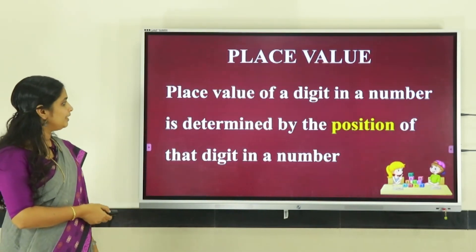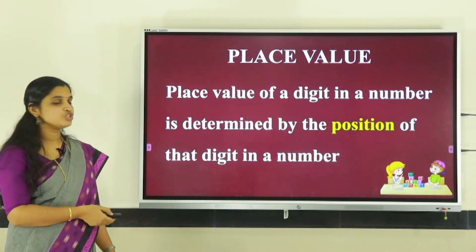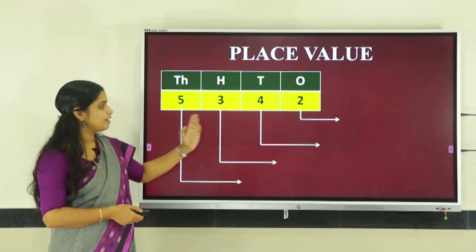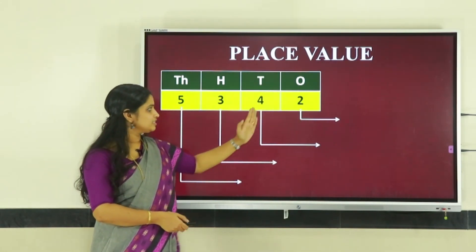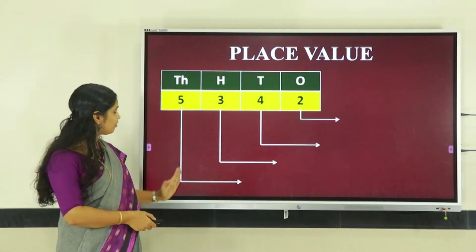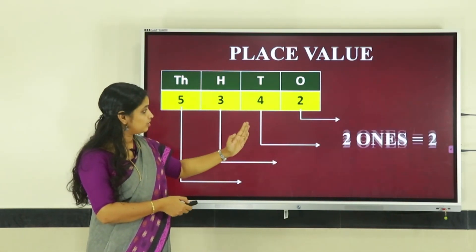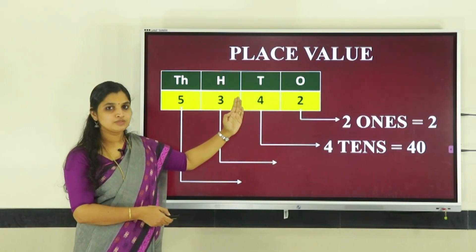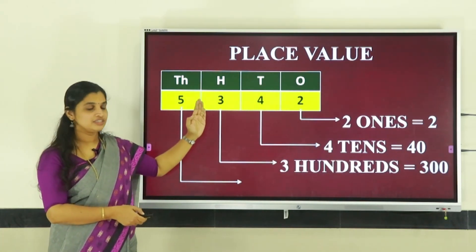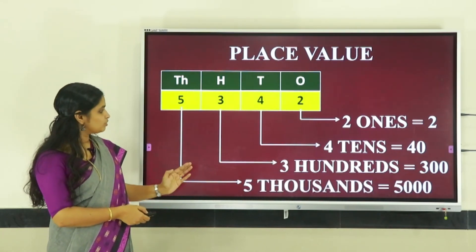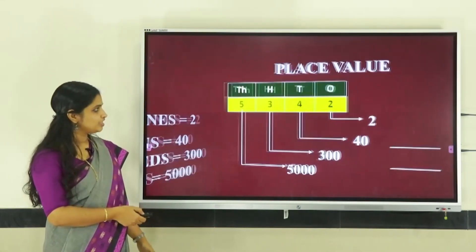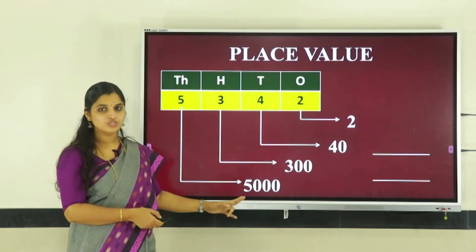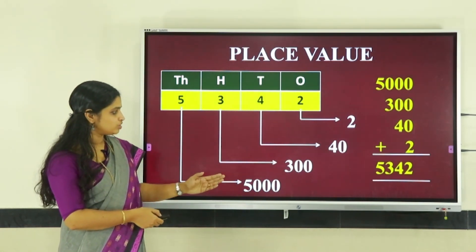Now next is place value. The place value of a digit in a number is determined by the position of that digit in the number. Let us see the place value of the number 5, 3, 4, 2. Two is in the ones place — two ones make two. Four is in the tens place — four tens make forty. Three is in the hundreds place — three hundreds make three hundred. Five is in the thousands place — five thousands make five thousand. When we add all these place values, we get the number.